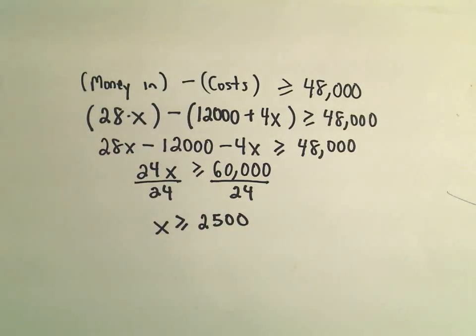So it says he's got to make and sell 2,500 fishing poles a year if he wants to make at least $48,000.